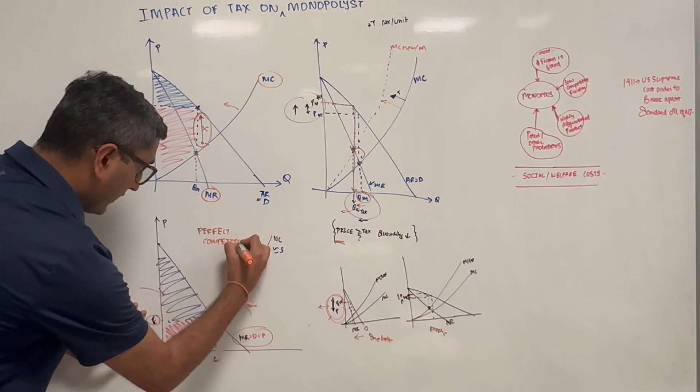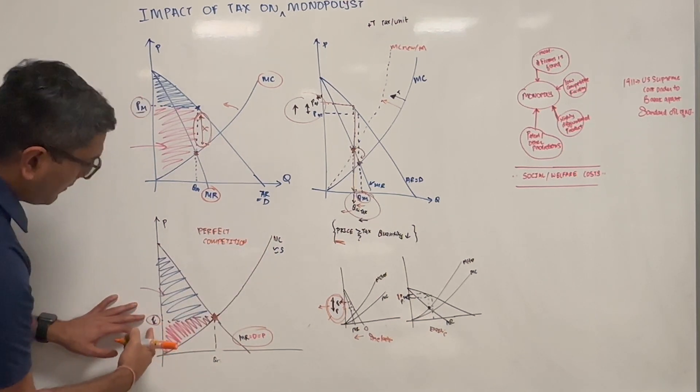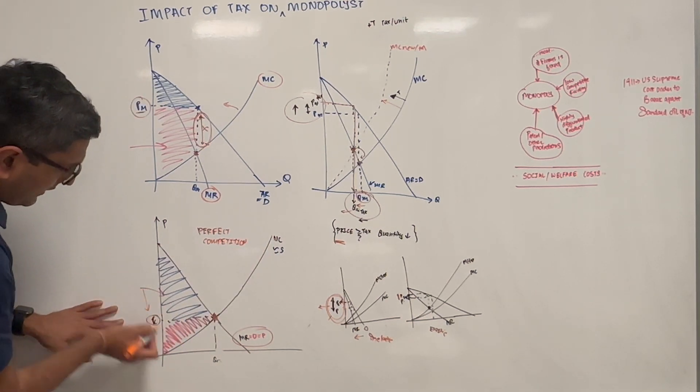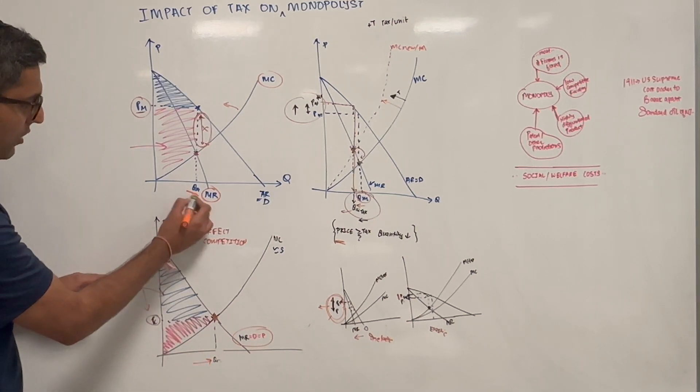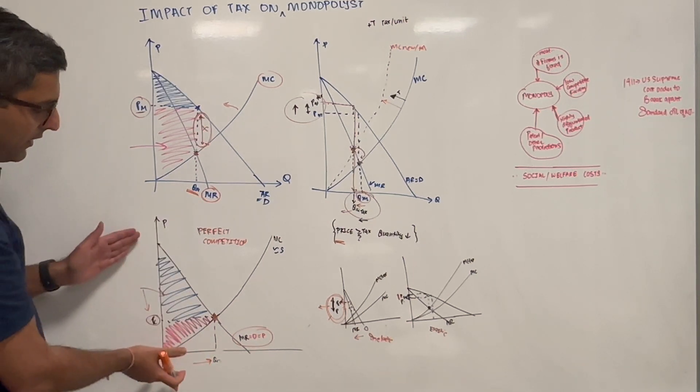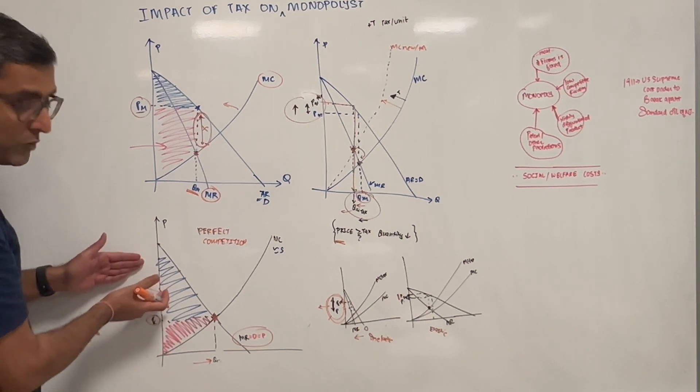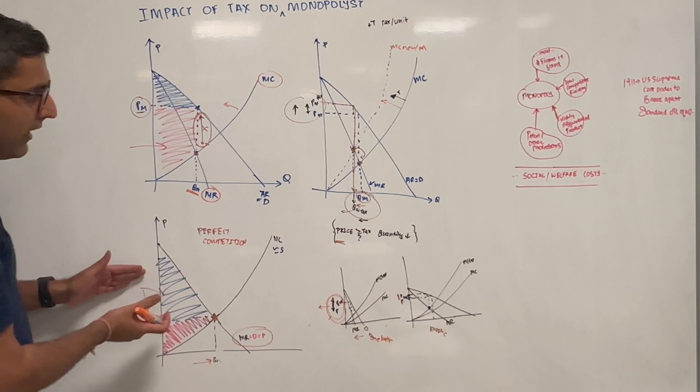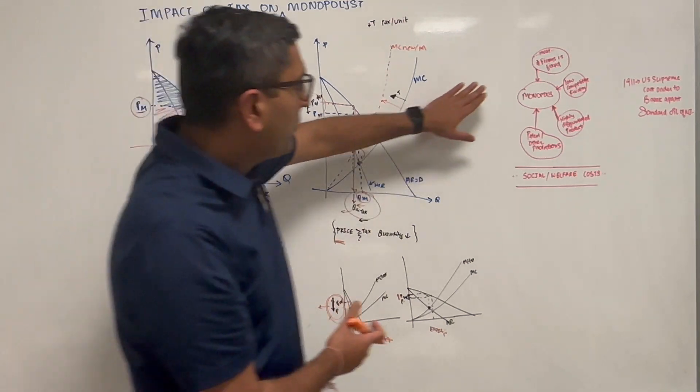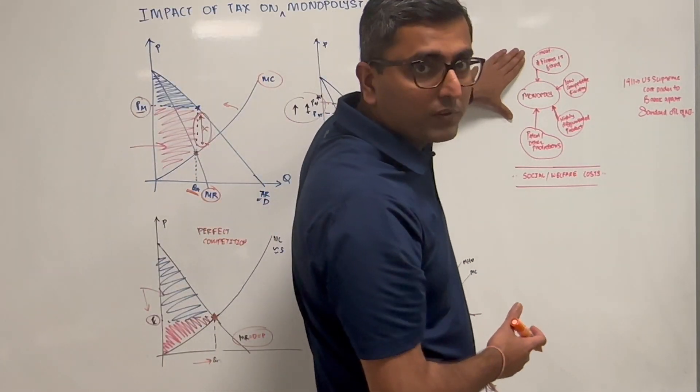So here the clearing price would be much lower than a monopolist, and quantity would be much higher compared to what a monopolist would charge. In perfect competition, the producer surplus would be much lower and consumer surplus would be much higher. The characteristics of a monopolist would be exactly opposite of perfect competition.